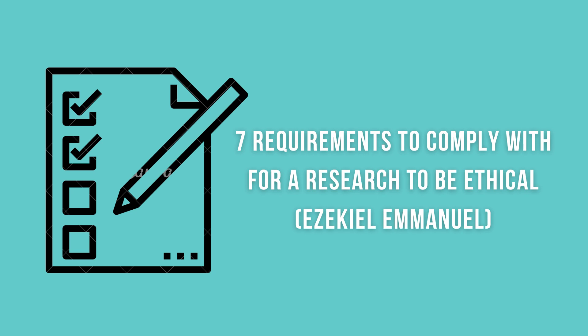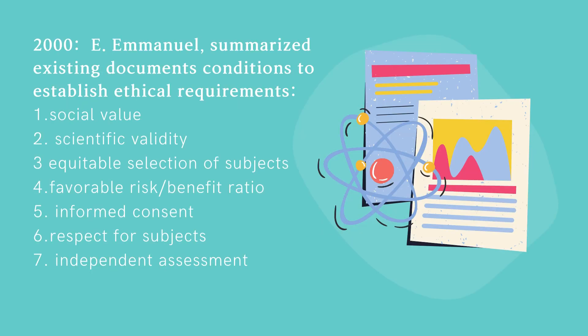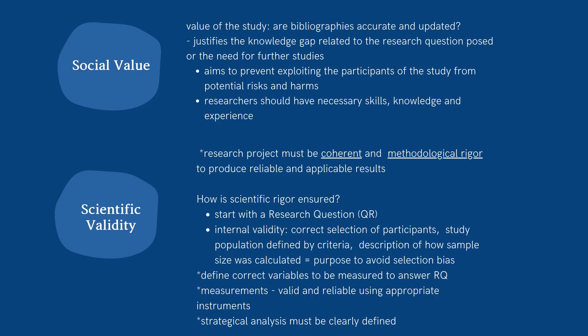In the year 2000, Ezekiel Emanuel, an American oncologist, bioethicist and senior fellow at the Center for American Progress, proposed seven requirements that clinical research should comply with to be ethical. The first is social value — the value of the study. Are bibliographies accurate and updated? This is to justify the knowledge gap related to the research question posed or the need for further studies, and also to prevent exploitation of participants from potential risks and harms. Researchers should have necessary skills, knowledge, and experience.